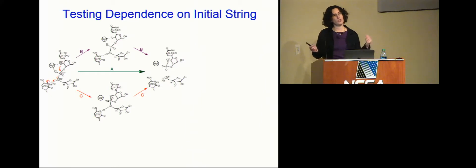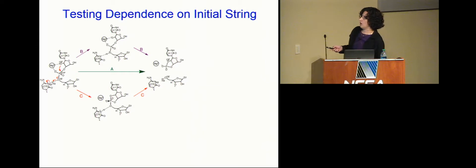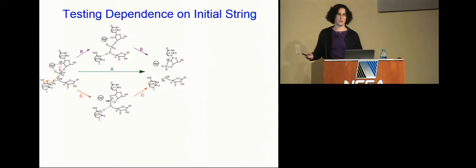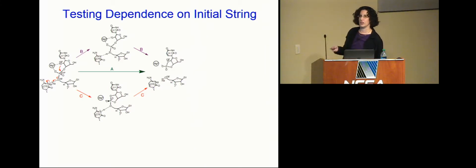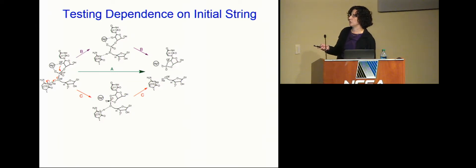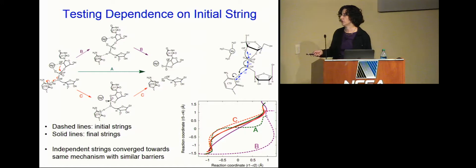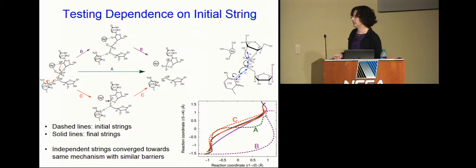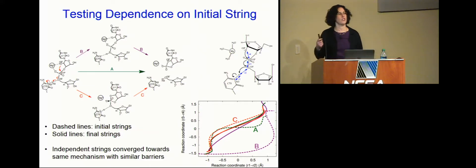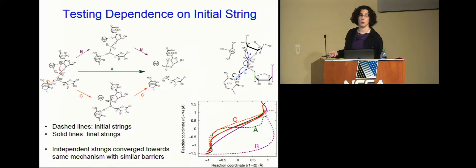An important question is how sensitive the method is to the initial guess. We started three different strings with three very different initial guesses: a concerted one, a sequential mechanism where the proton transfers first, and one where phosphorus is attacked first. All three converged to essentially the same place. The purple string wasn't fully converged because we ran out of XSEDE time, but it was clearly heading the same way. This shows the method is not very sensitive to the initial guess, which is crucial for avoiding bias in the results.